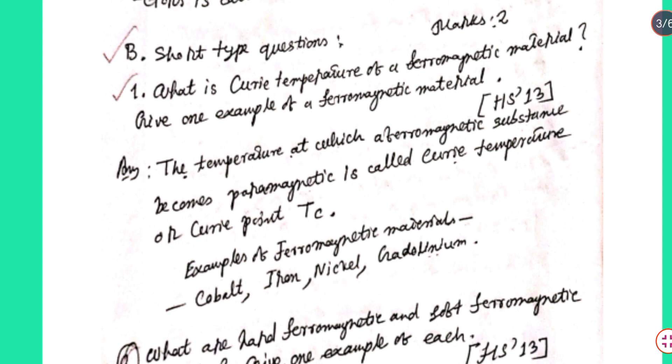Examples of ferromagnetic materials include cobalt, iron, nickel, and gadolinium.